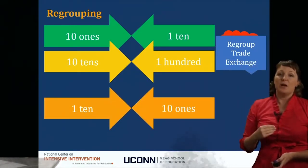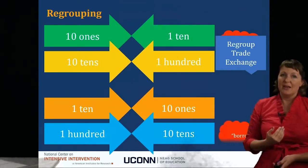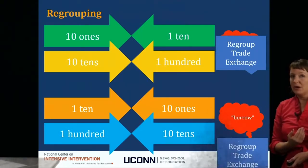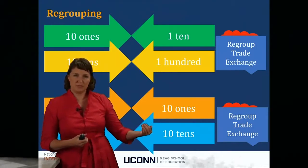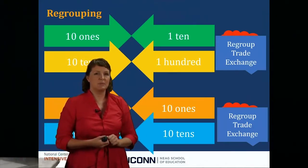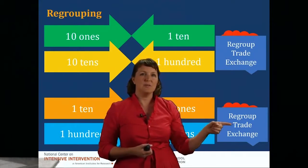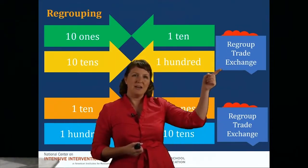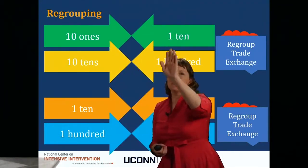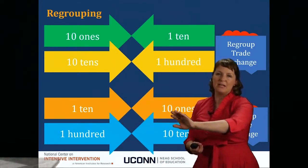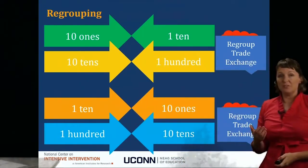With subtraction, we also have regrouping: 1 ten for 10 ones, or 100 for 10 tens. Some of you may be used to the term 'borrow' — but we want to focus on the conceptual terms regroup, trade, or exchange. Notice the terms we use in addition are the same as those in subtraction: I regroup 10 ones for 1 ten in addition, and I regroup 1 ten for 10 ones in subtraction, showing the relationship among these different units of place value.